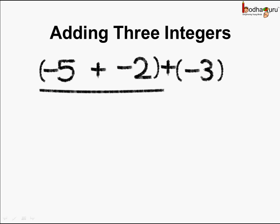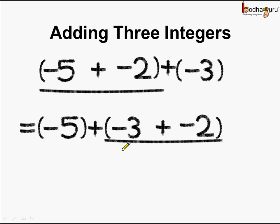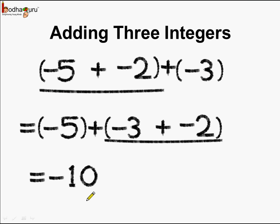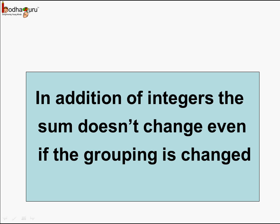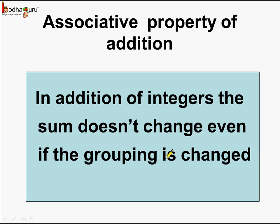So what do we see? When we add minus 5 and minus 2 first and then add minus 3, or if we add minus 3 and minus 2 first and then add minus 5 to it, the answer is the same in both cases, which is minus 10. We can say in addition of integers, the sum does not change even if the grouping is changed. This property is called the associative property of addition.